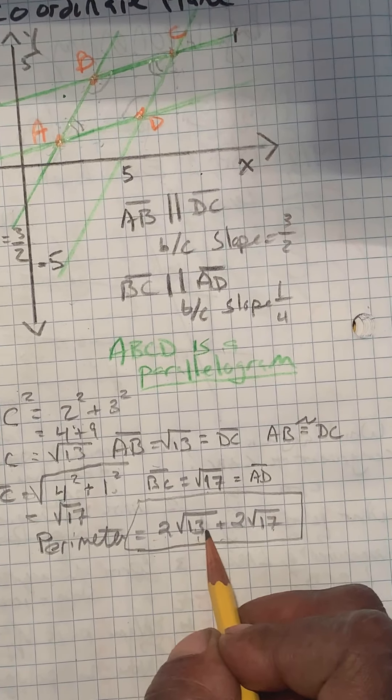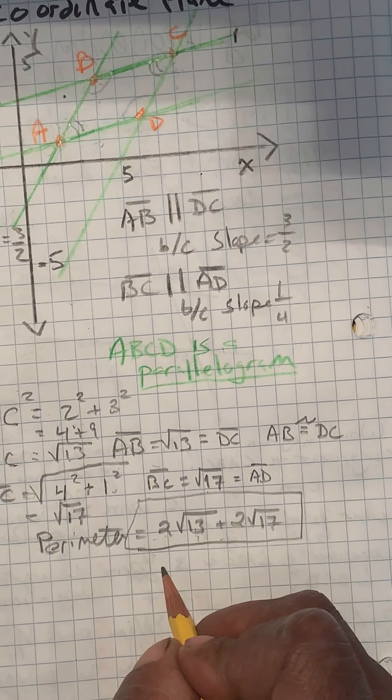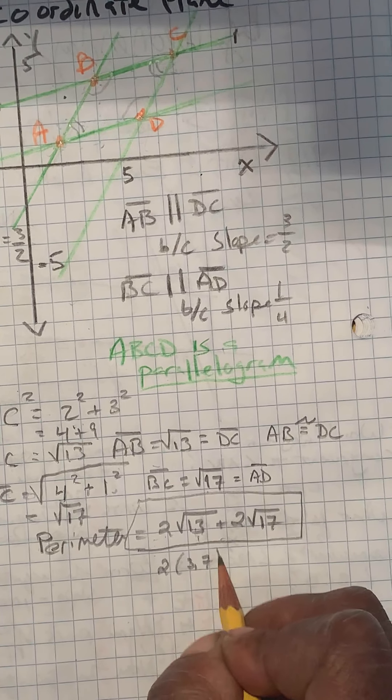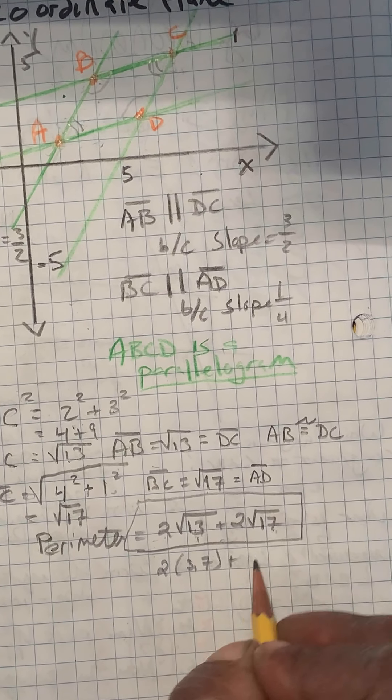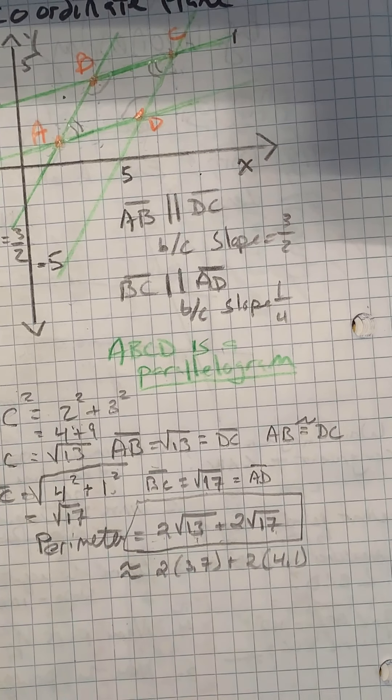So this would be probably around 3.7. You can make an approximation, 2 times 3.7. And this is going to be a little bit more than 4, so 2 times 4.1 would be an approximation for that perimeter.